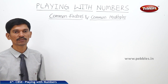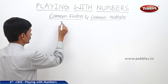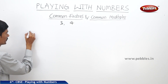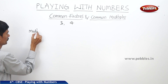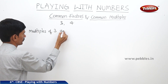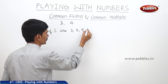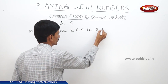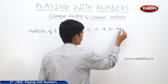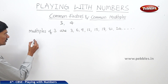Now let us find the common multiples of 3 and 4. First let us find the multiples of 3. Multiples of 3 are 3, 6, 9, 12, 15, 18, 21, 24 and so on.